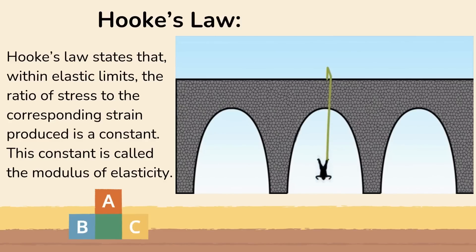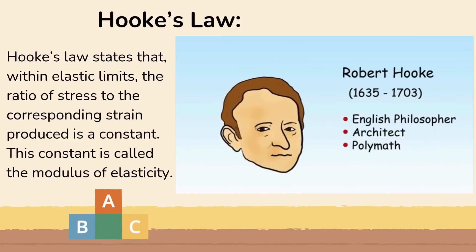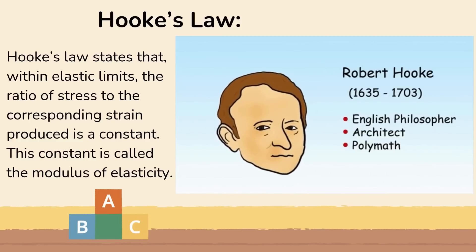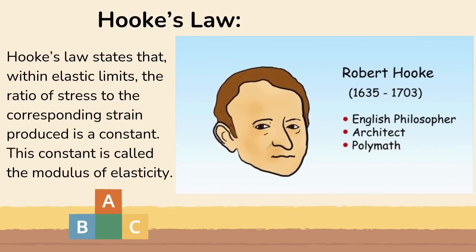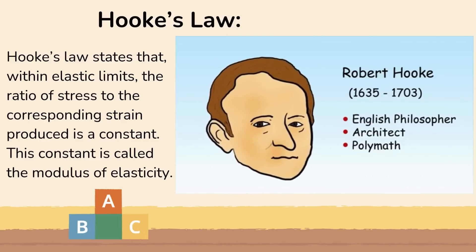Through Hooke's law, designers are able to calculate the length the rope will stretch based on the weight of the person attached to it, so that the elastic stops stretching before reaching the ground. Hooke's law is named after Robert Hooke, a 17th century British physicist who first stated this law in 1660.